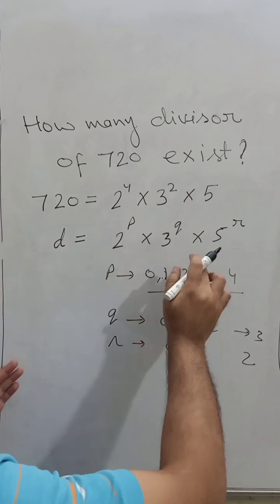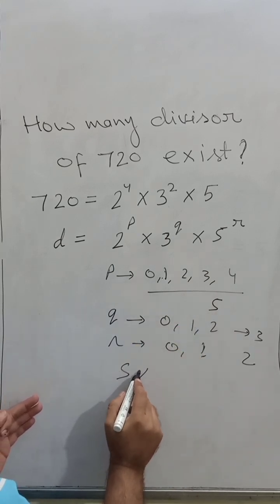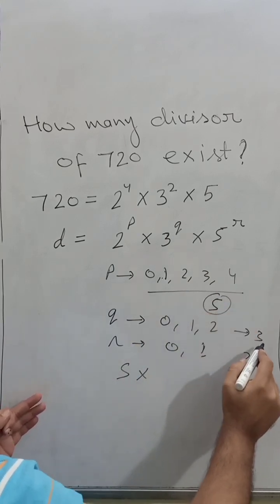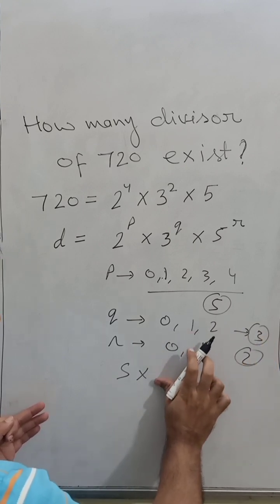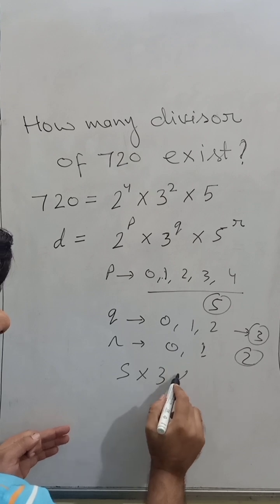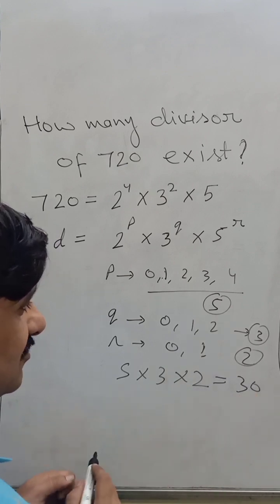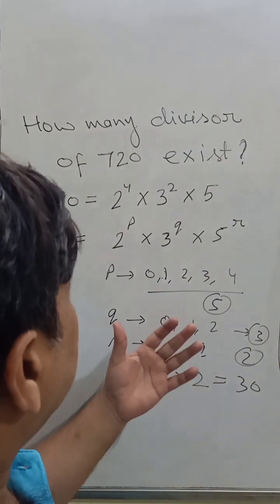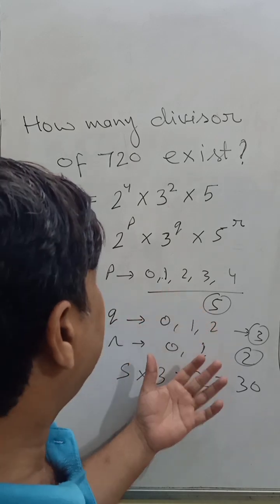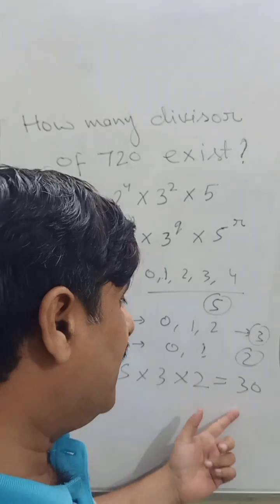How many kinds of divisors can exist? There is 5, this one and this one. 5 times 3 times 2, so it is 30. There are 30 kinds of divisors that exist which can divide 720, including 720 itself and 1.